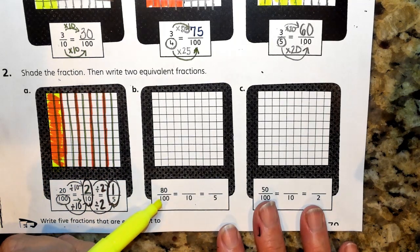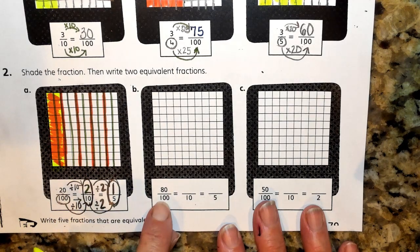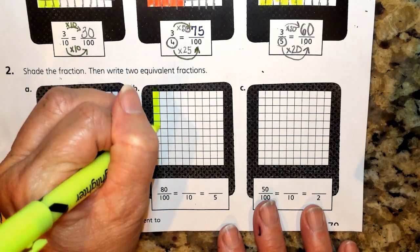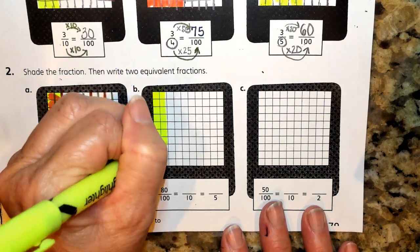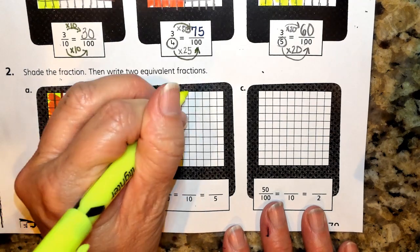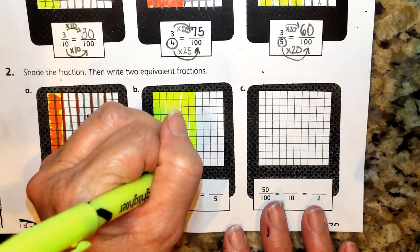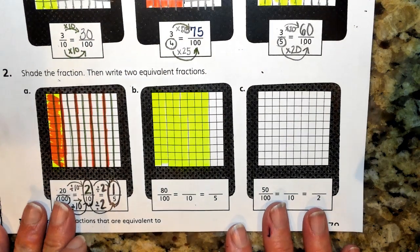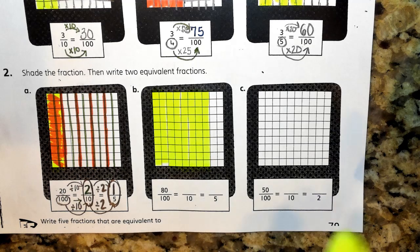So the first thing I'm going to do is shade in 80 of the 100 pieces. So this would be 10, 20, 30, 40, 50, 60, 70, and 80. So we have 80 of the 100 pieces.